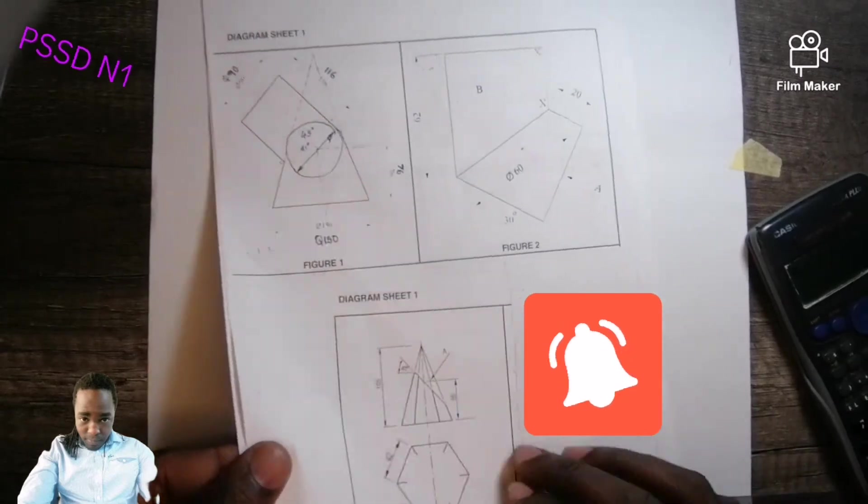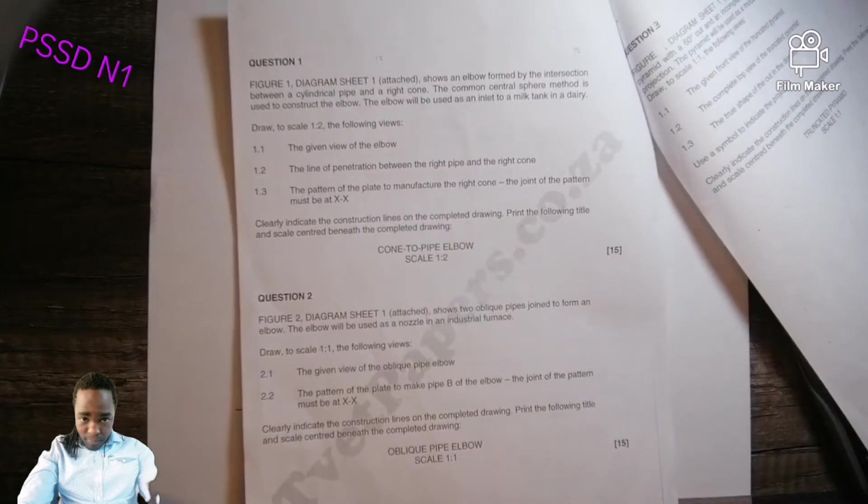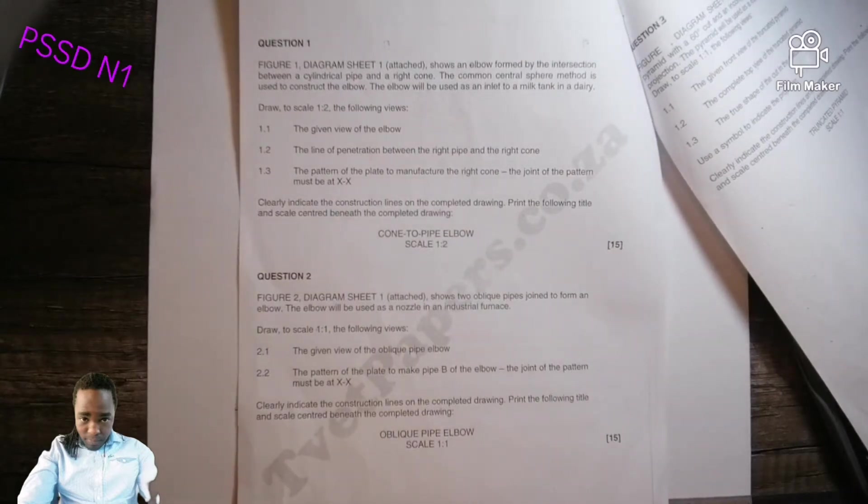Let us read the question for figure one. Figure one diagram sheet one attached shows an elbow formed by an intersection between a cylindrical pipe and a right cone.